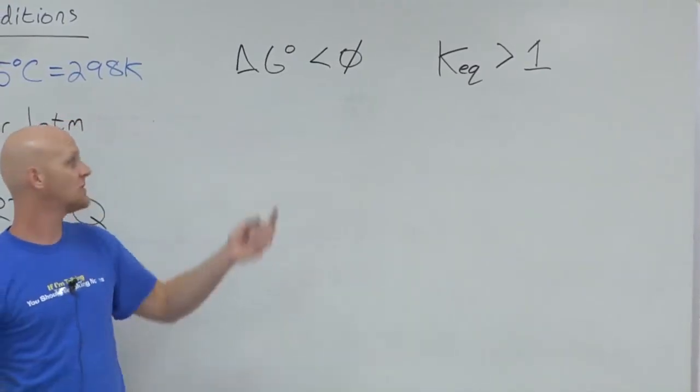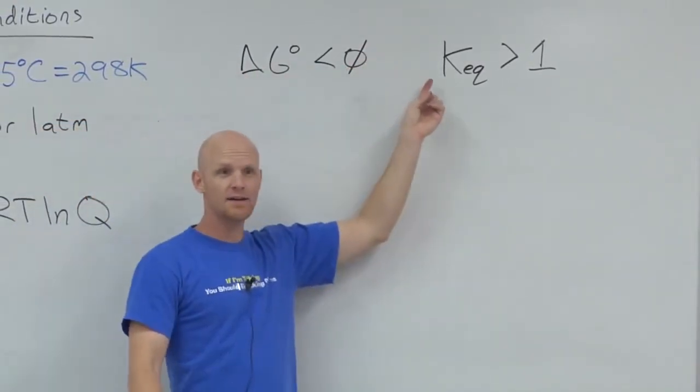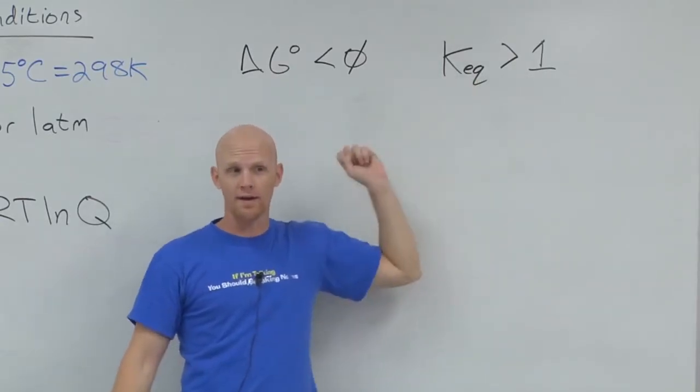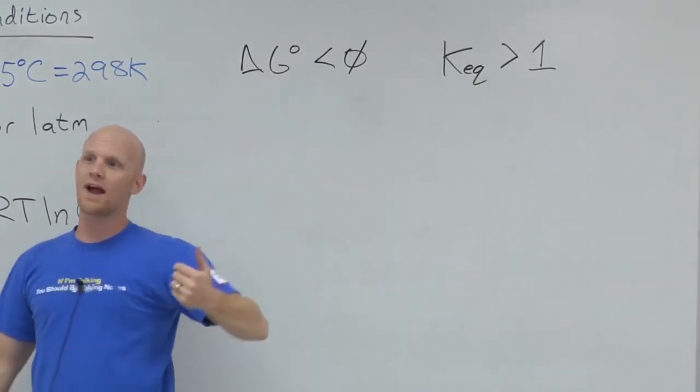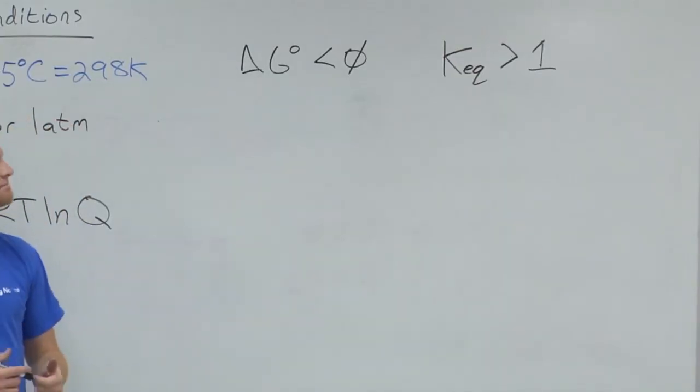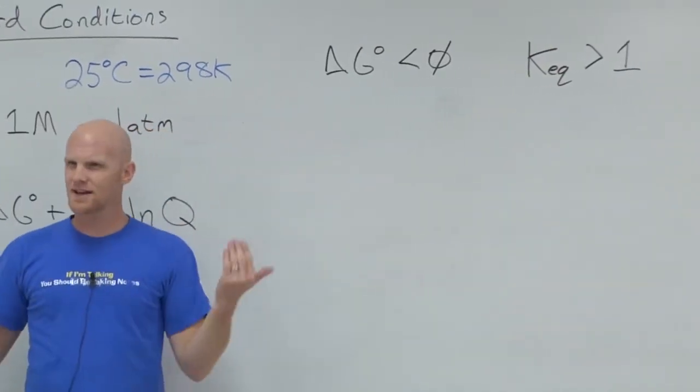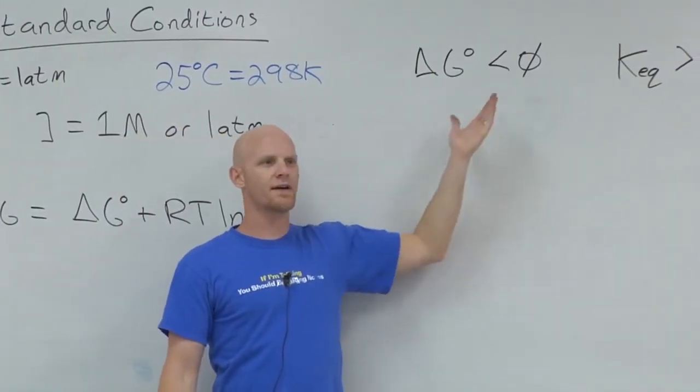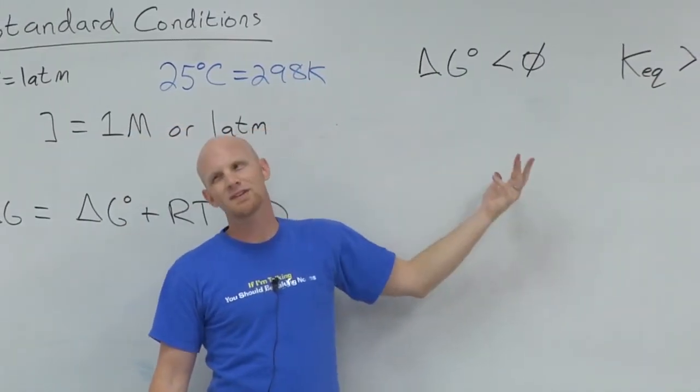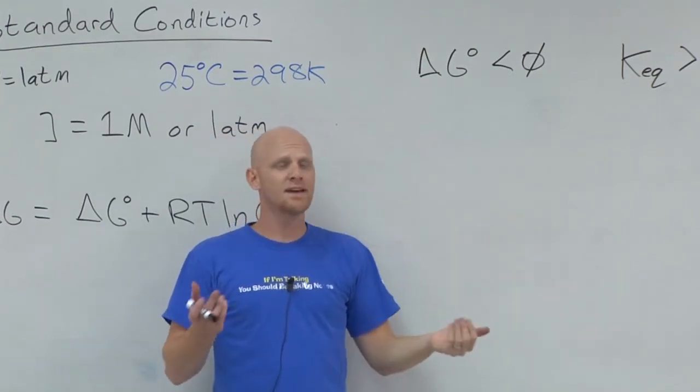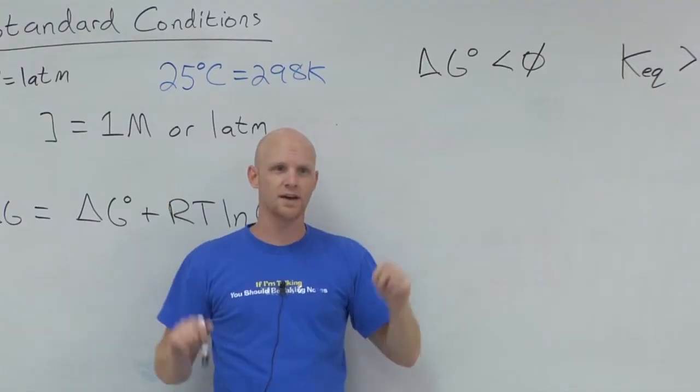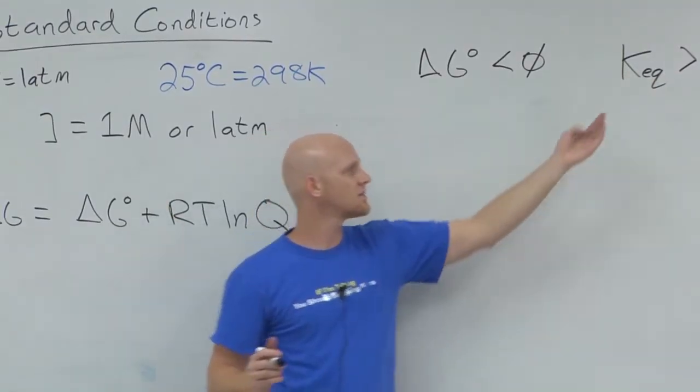So in this case, if delta G standard is negative, K, your equilibrium constant, will be greater than one. You'll have more products than reactants. That's a reaction that favors products. And this kind of makes sense in a somewhat intuitive sense. I see delta G standard being negative, and I should think, oh yeah, reaction spontaneous. Well, it's really spontaneous under standard conditions. But even if it's spontaneous under standard conditions, you should end up when the reaction is done at equilibrium with more products. And so K is bigger than one.